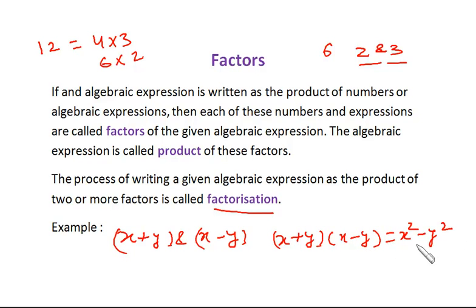That means x plus y and x minus y are factors of x square minus y square. And x square minus y square is product of x plus y and x minus y. And this process is known as factorization.